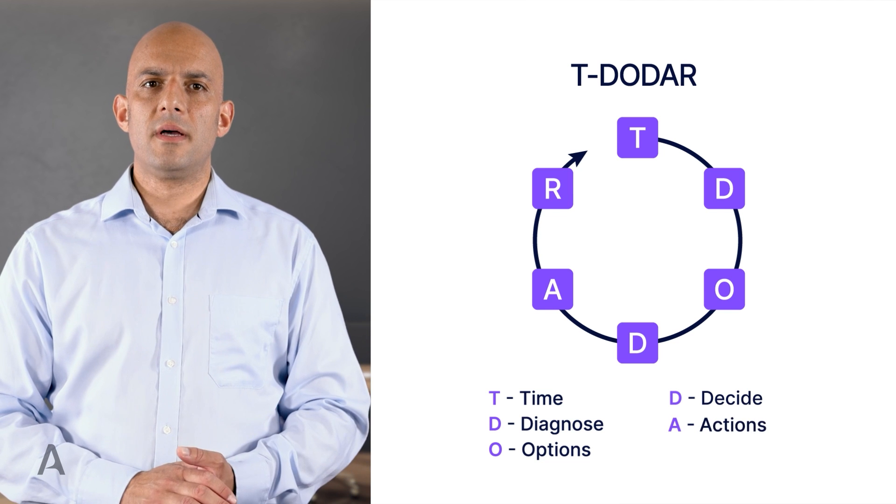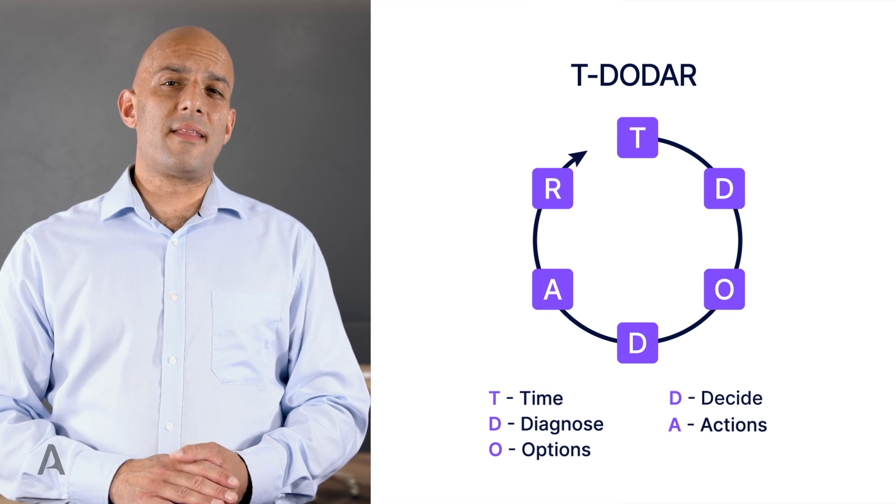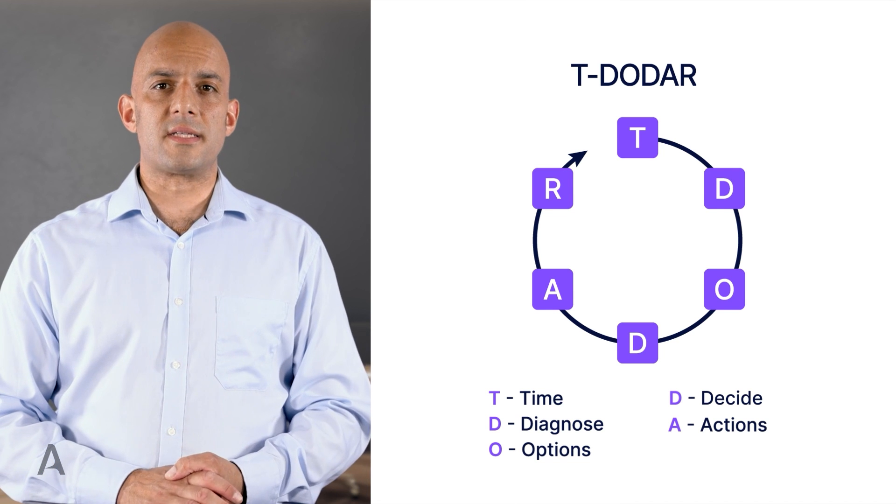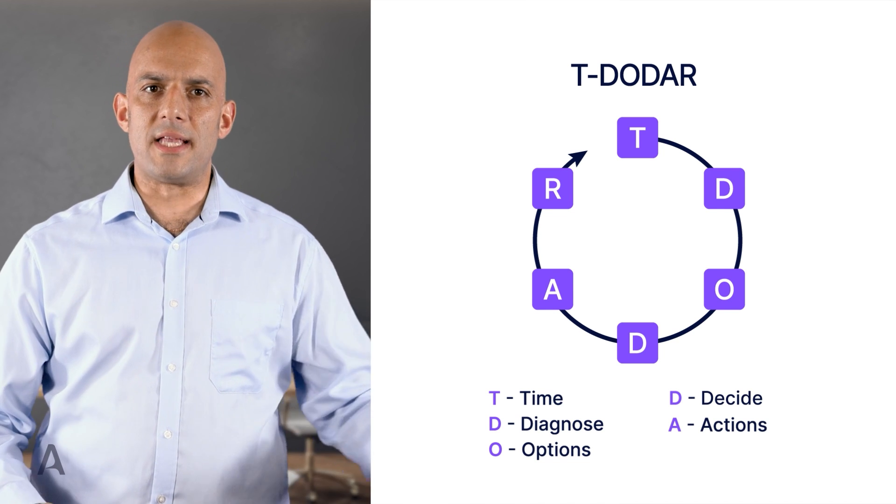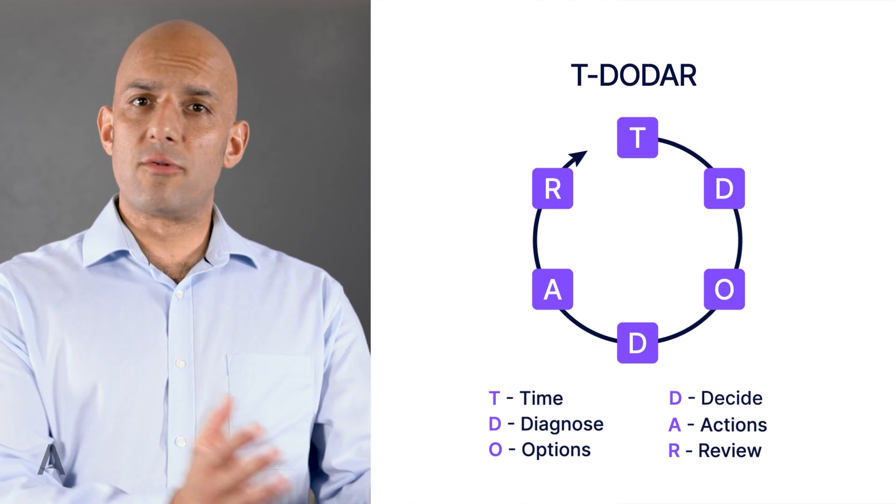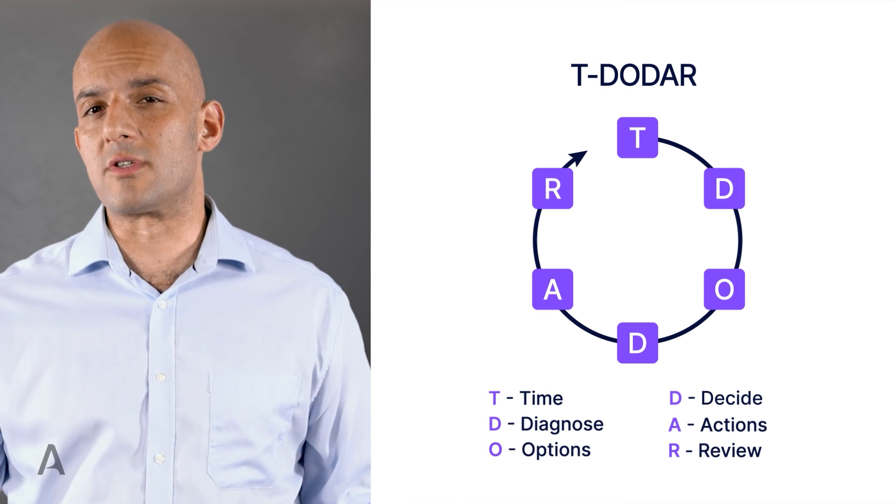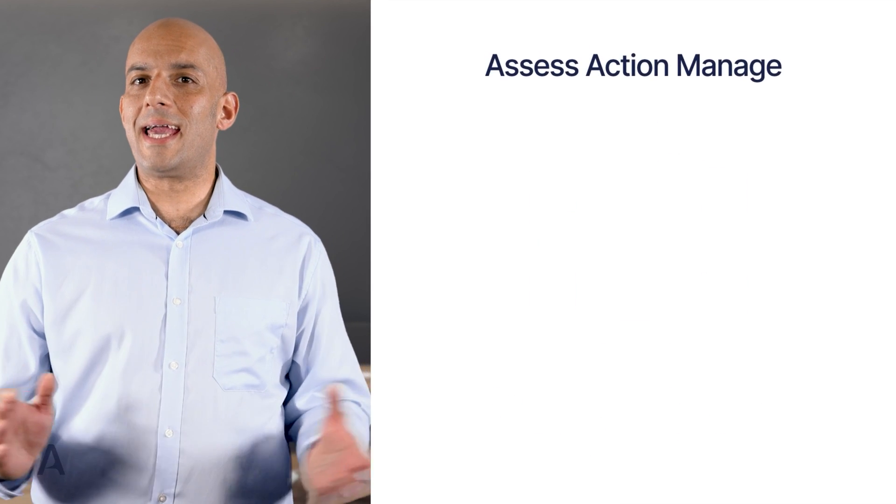A, actions. Action the plan, which also involves assigning the tasks to the relevant parties, in other words the co-pilot, cabin crew, ATC, engineer, management, and so on. R, review. Continue to review the process, making changes as needed until the situation has been resolved. Next up we have AAM.